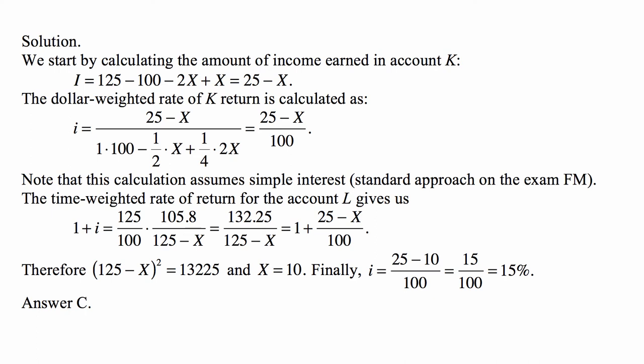This calculation is in simple interest, which is standard approach on the exam FM. The time-weighted rate of return for account L gives us: 1 plus I equals 125 over 100, because the account goes from 100 to 125 in the first period, and then 105.8 over 125 minus X, because the account goes from 125 minus X to 105.8 at the end of the year.